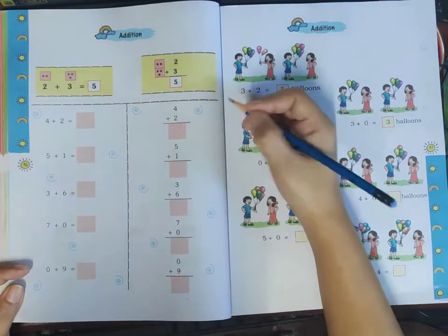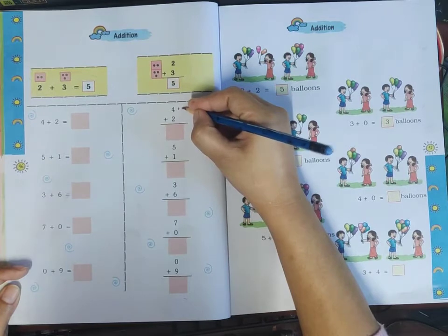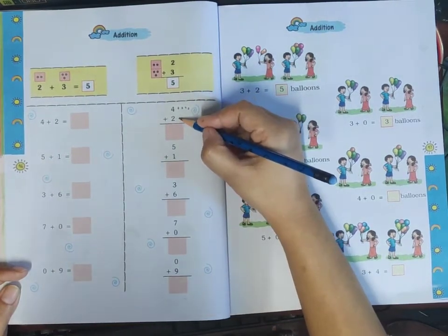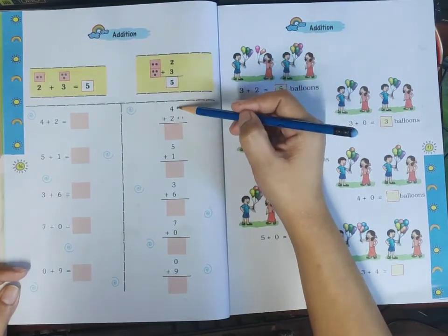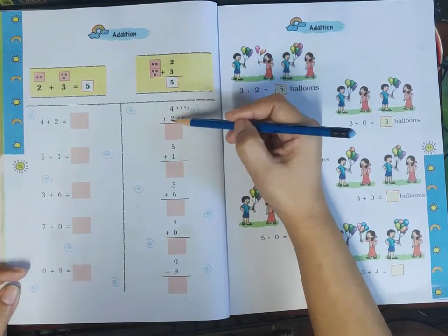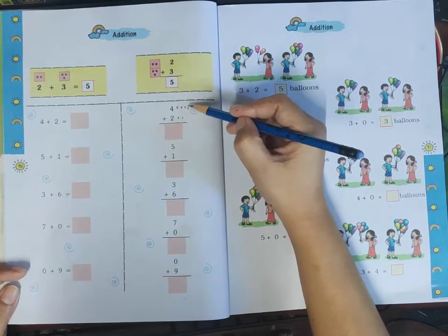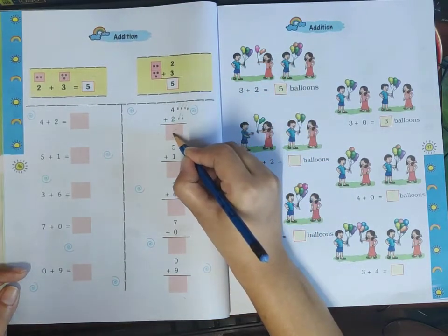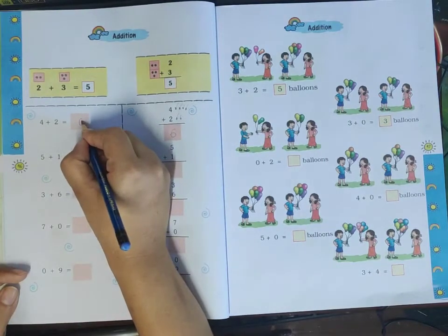Here is the first problem. We have four and we need to add two. Four plus two. Let me count: one, two, three, four, five, six. The answer is six. Four plus two equals six. I will write six here.